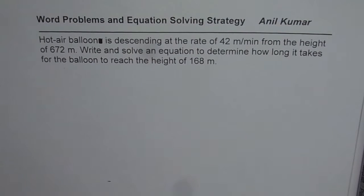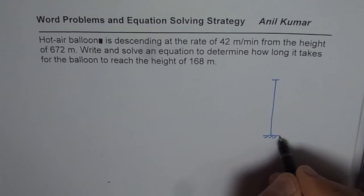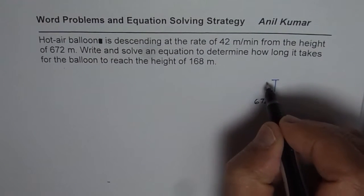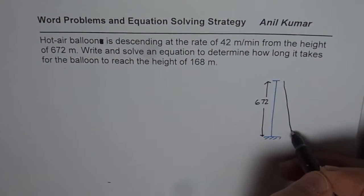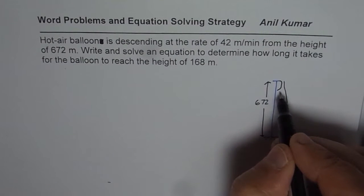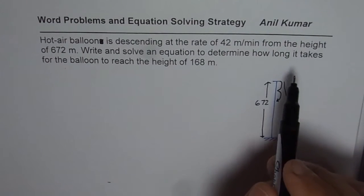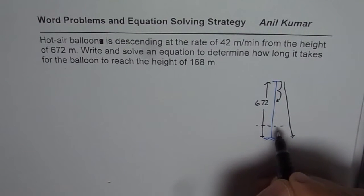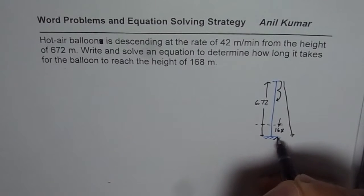We are given that the balloon is at a height of 672 meters above the ground. With time it is actually coming downwards at the rate of 42 meters per minute — so every minute the distance is decreasing by 42 meters. We need to find how much time it will take to reach the height of 168 meters.